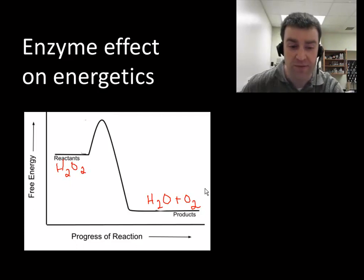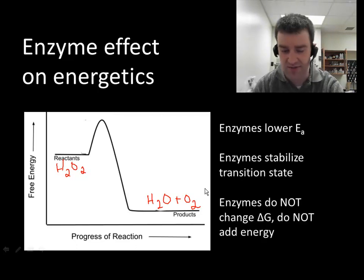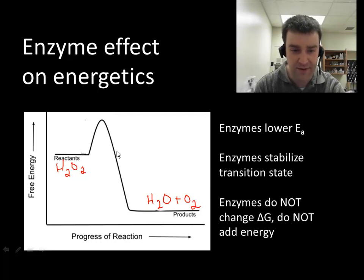And yet, when you pour hydrogen peroxide on, say, a cut, and you see those bubbles of oxygen gas almost immediately, that is because we have an enzyme. And what we're going to see that enzymes do is they lower the hill. And they lower that hill effectively by lowering the transition state.